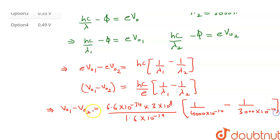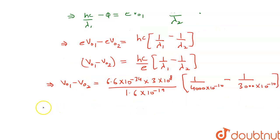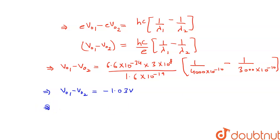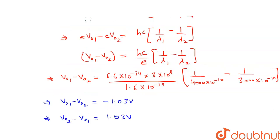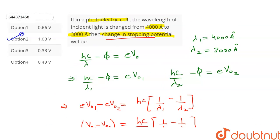After simplifying this equation, we get V0_1 minus V0_2 is equal to minus 1.03 volts. So we can write V0_2 minus V0_1 is equal to 1.03 volts. Now let's check the options, so option number 2 will be the correct answer. Thank you.